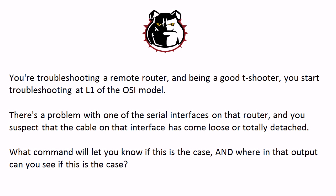You're troubleshooting a remote router, and being a good troubleshooter, you start troubleshooting at the physical layer of the OSI model — it's where you always start. You suspect there is a loose cable on one of the serial interfaces on that router. What command can you run from your remote location to let you know if this is the case, and where in that output can you see it?